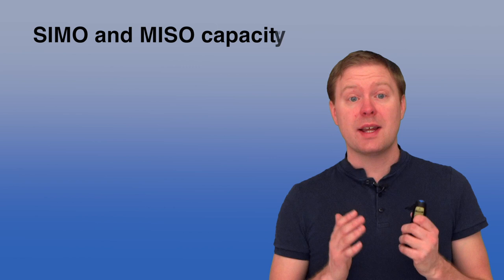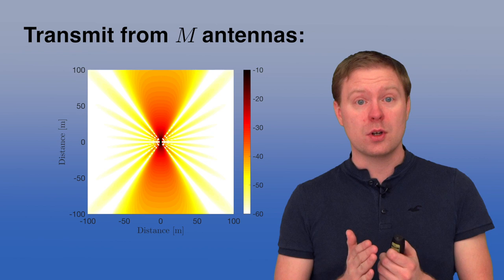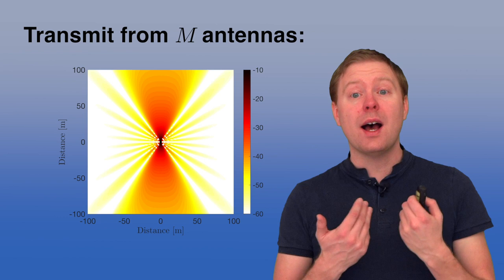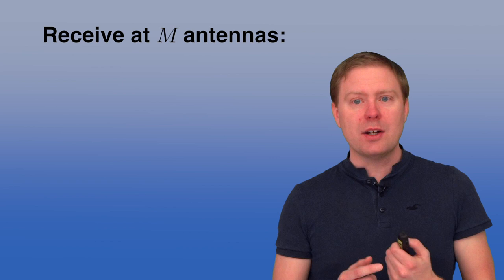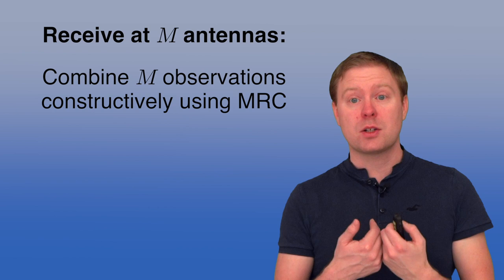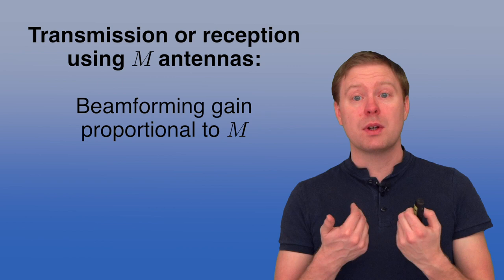The capacity expression tells us we get a roughly M times larger SNR when transmitting from M antennas or receiving using M antennas, but this gain is achieved in different ways. When transmitting from M antennas, we use beamforming towards the user location, and maximum ratio transmission ensures the M copies of the signal add constructively at the receiver without using more power. When receiving with M antennas, we transmit omnidirectionally from one antenna but observe M copies, which are combined constructively using maximum ratio combining, while the noise terms do not add constructively — giving the same noise variance as before. In both cases, we get a beamforming gain roughly proportional to the number of antennas.